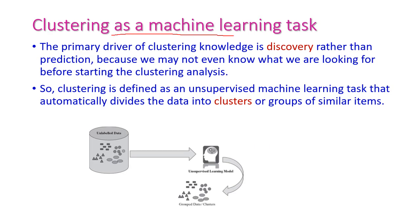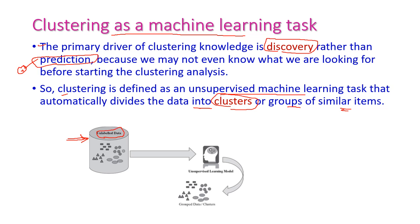Next, let us see clustering as a machine learning model. Clustering is used to discover rather than predict the output. It is used to discover existing unlabeled data instead of predicting a single output. Clustering is defined as an unsupervised machine learning task that automatically divides the data into clusters or groups of similar items. The unlabeled data is given to the unsupervised machine learning model — that is, the clustering model — which analyzes the data and identifies internal patterns based on characteristics, then groups or clusters the data.